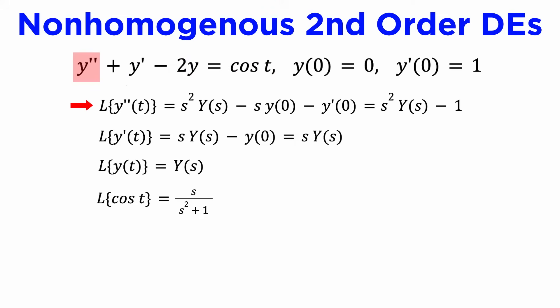Looking at our table of Laplace transforms, we can transform the y double prime of t term into s squared times capital Y of s minus s times y of 0 minus y prime of 0, where capital Y is the Laplace transform of our solution y of t. Similarly, we can transform y prime of t into s times capital Y of s minus y of 0, and the y of t term just becomes capital Y of s by definition.